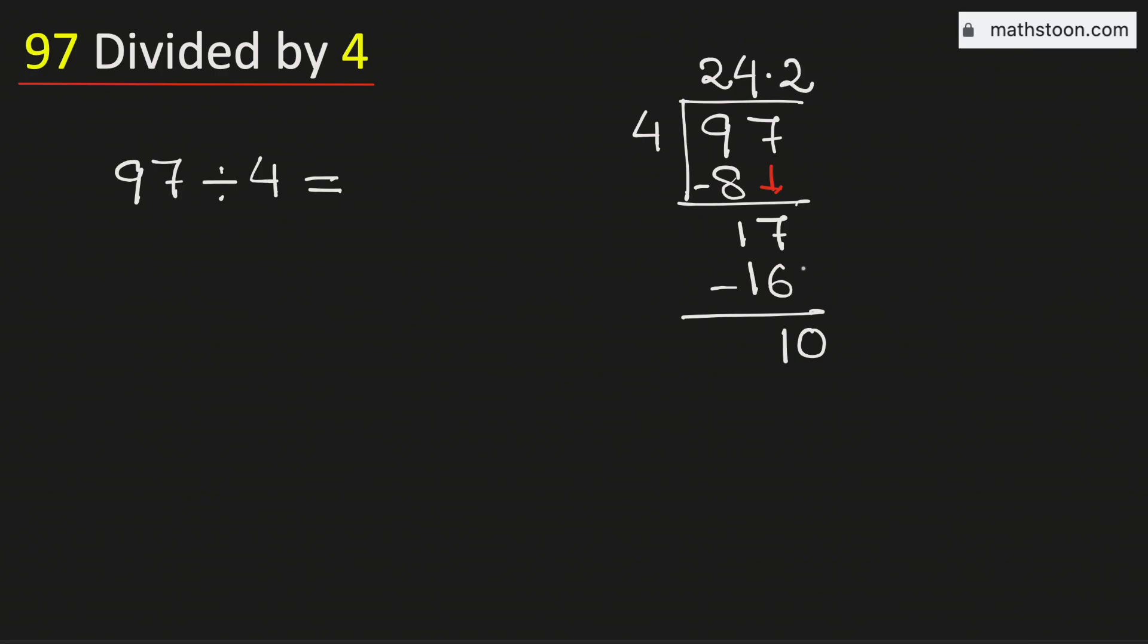Now 4 times 2 is 8. Subtract and we get 2. And 2 is less than 4. That is why we will again borrow 1 zero.